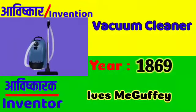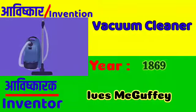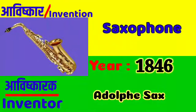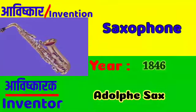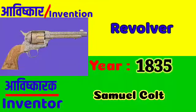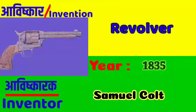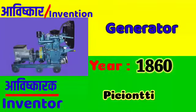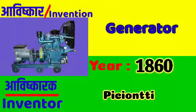Vacuum Cleaner: Ives McGaffey in 1869. Saxophone: Adolphe Sax in 1846. Revolver: Samuel Colt in 1835. Generator: Pixii in 1860.